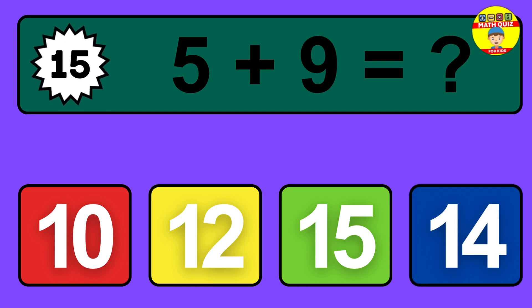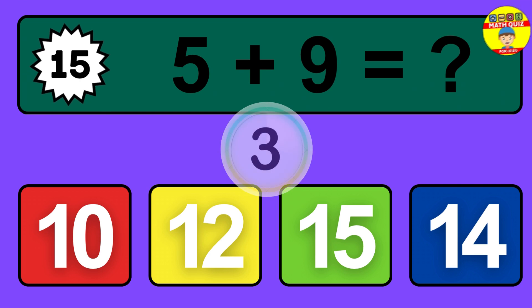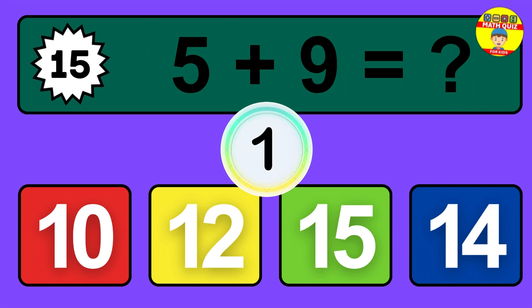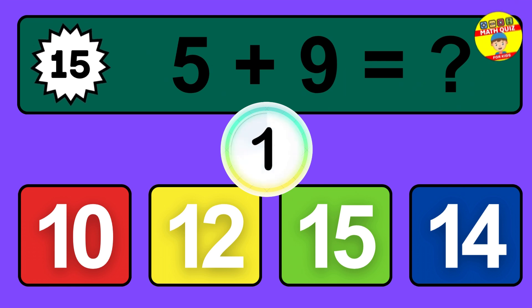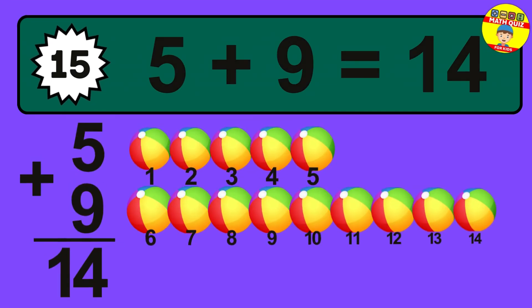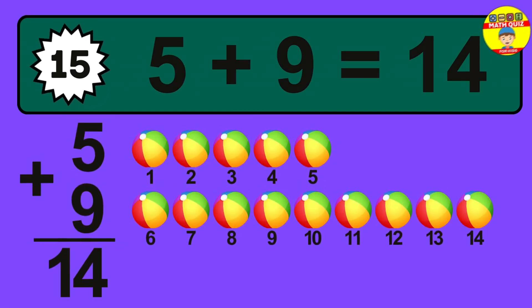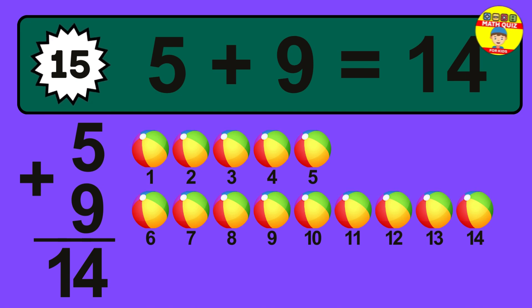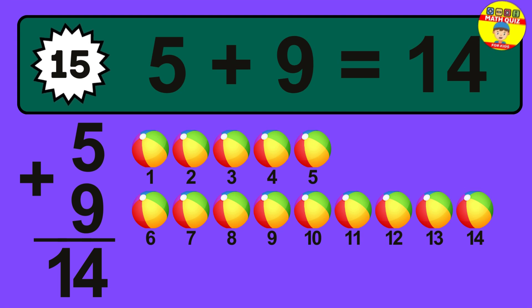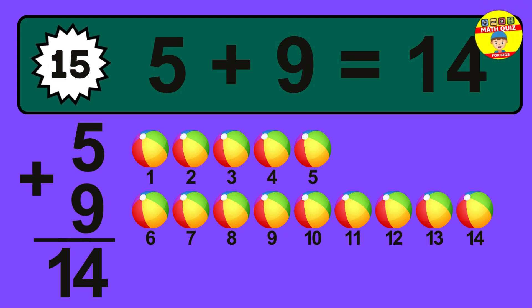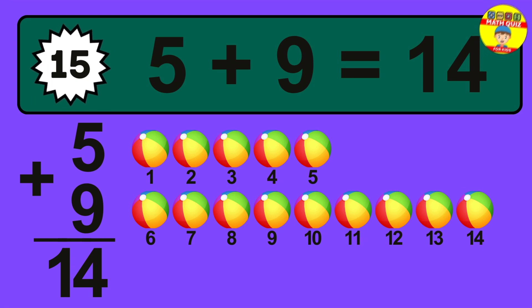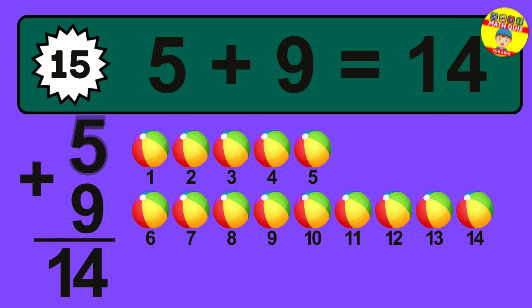Question 15. 5 plus 9 equals what? The answer is 5 plus 9 is 14. Let's count it: 1, 2, 3, 4, 5, 6, 7, 8, 9, 10, 11, 12, 13, 14.